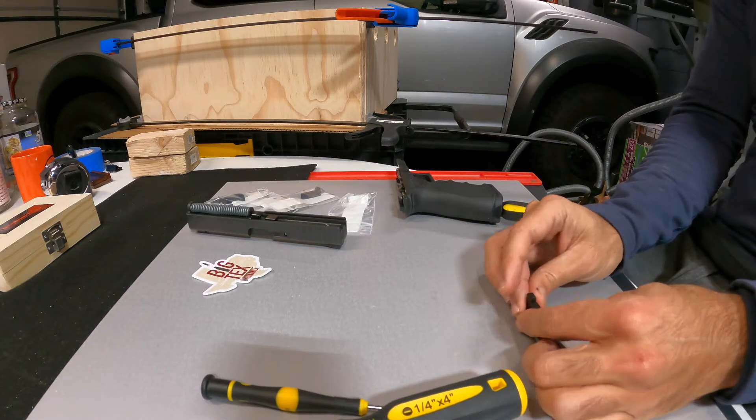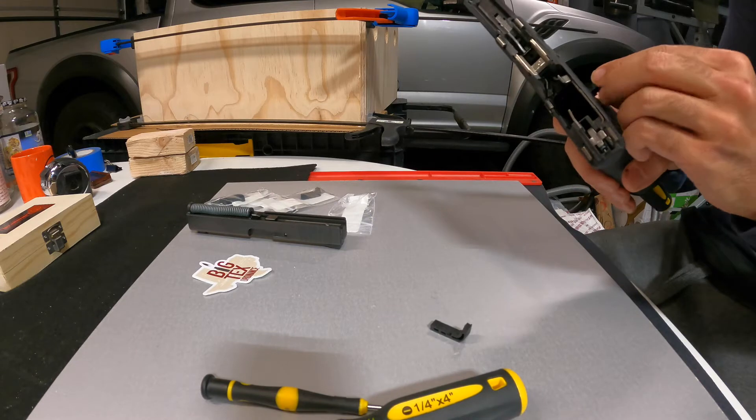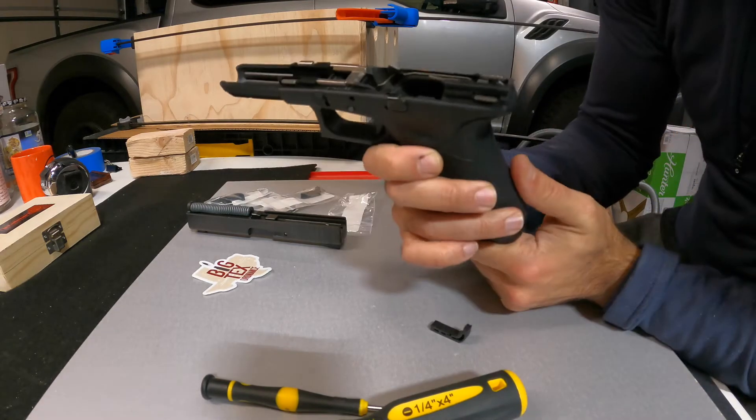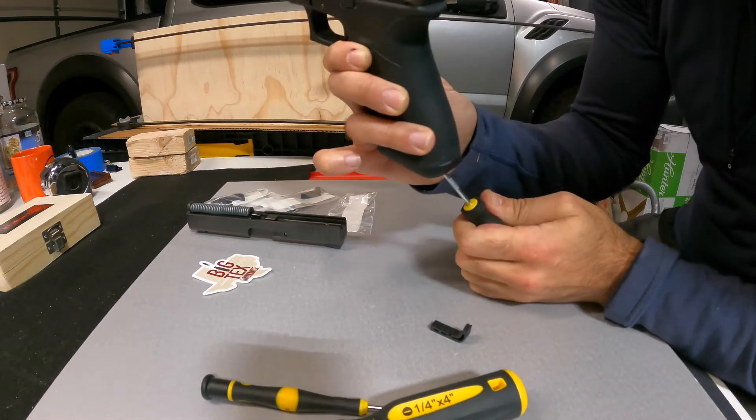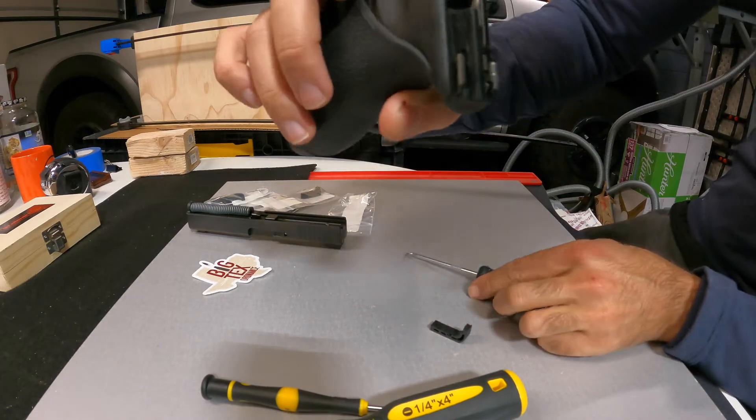Once you get the old one out, you just pop it back in the same direction that it came out. Just hold the spring back. There's a couple ways to do that. My hook is on the back of the spring - see where my finger is? It's just that little piece of steel spring.